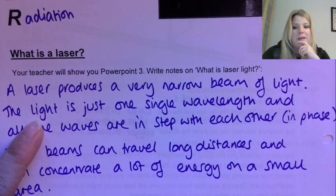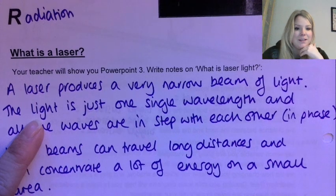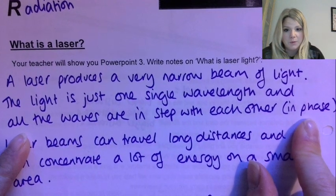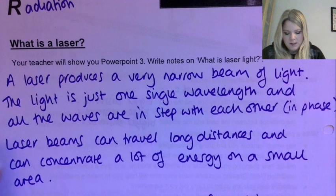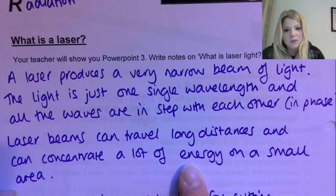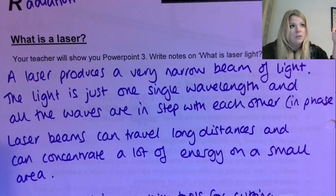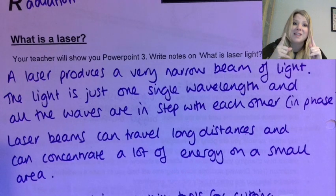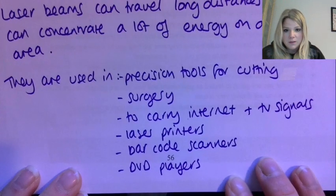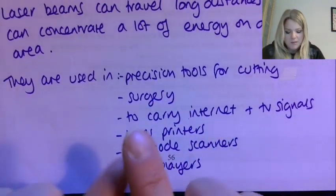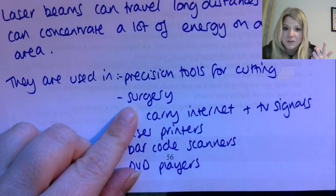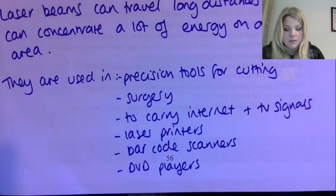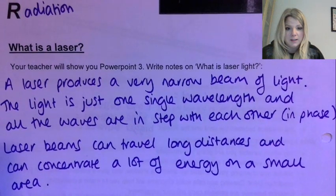So it just means they're all together. Laser beams can travel long distances and can concentrate a lot of energy on a small area. So laser beams don't spread out like normal light does, and because of that, that means they can focus a lot of energy on this really tiny area. And because of that that means they're very useful. So some uses for them are here. So precision tools for cutting, in surgery like laser eye surgery I'm sure you've heard of that, to carry internet and TV signals, laser printers, barcode scanners, and DVD players. So if you pause and get this bit written in.